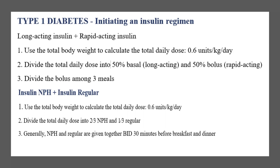Once you multiply by the total body weight, you'll have the units per day. For long acting plus rapid acting insulin, divide the total daily dose into two: 50% basal and 50% rapid acting (bolus). Then in step three, divide the bolus into three meals: breakfast, lunch, and dinner.